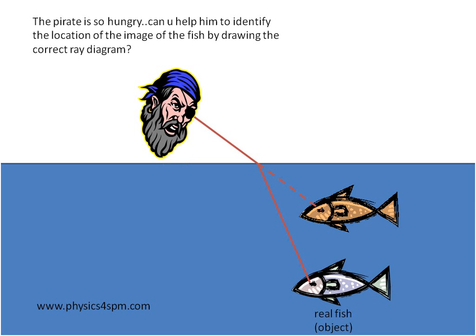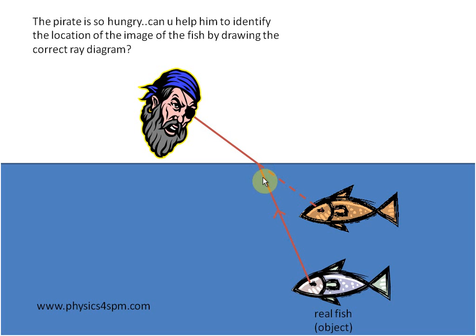Have you finished? No. The next thing you've got to do is to draw the direction of the light. The light actually comes from the real fish. This is the ray diagram of the light moving from the real fish, out towards the water, and it is bent due to refraction phenomena.